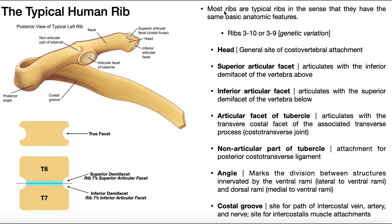Most ribs are considered typical because they share some common anatomical features, and those are what we're going to talk about here. We'll identify them on this rib, and when we look at the joints in the next video, we'll get a little bit more information on these. Ribs that are typical are either considered ribs 3 through 10 or 3 through 9. Rib 10 can be variable due to genetic variation as to whether or not it's typical or atypical.